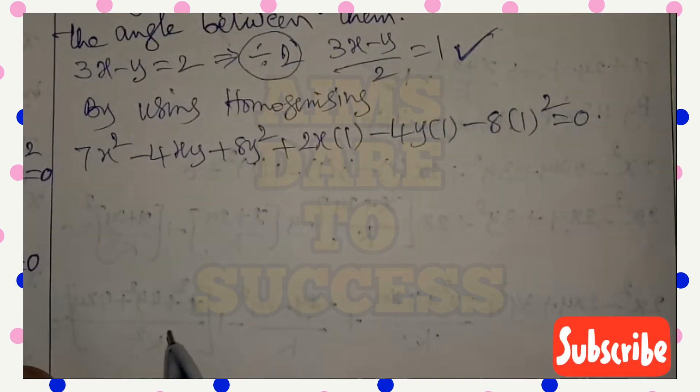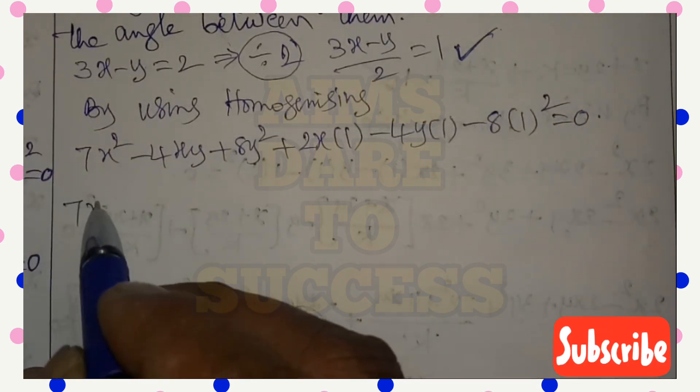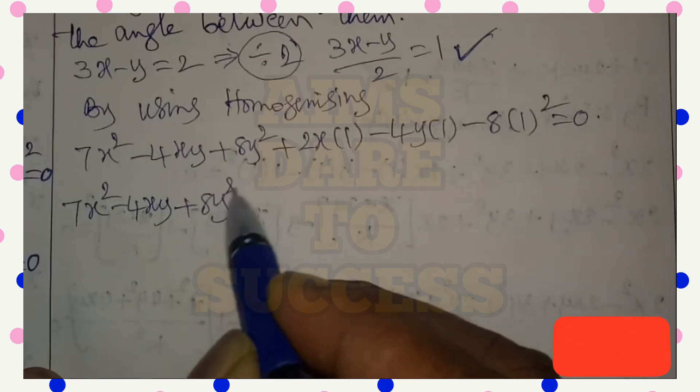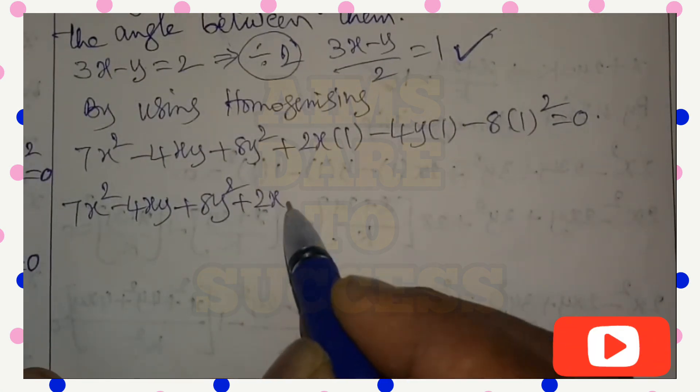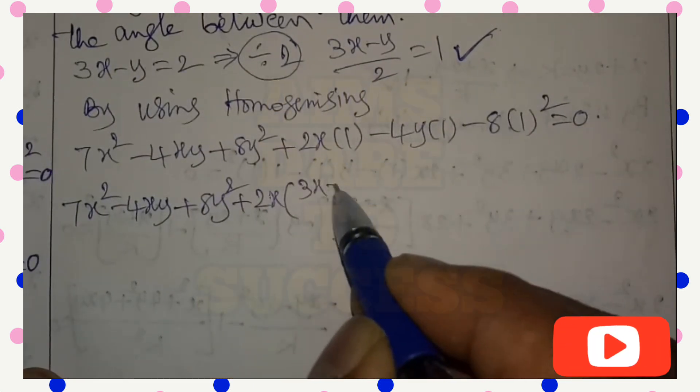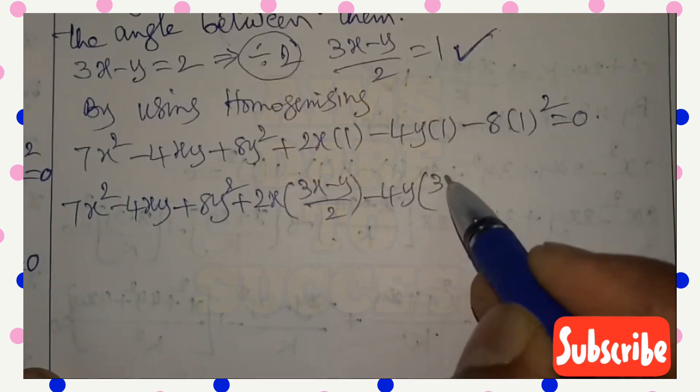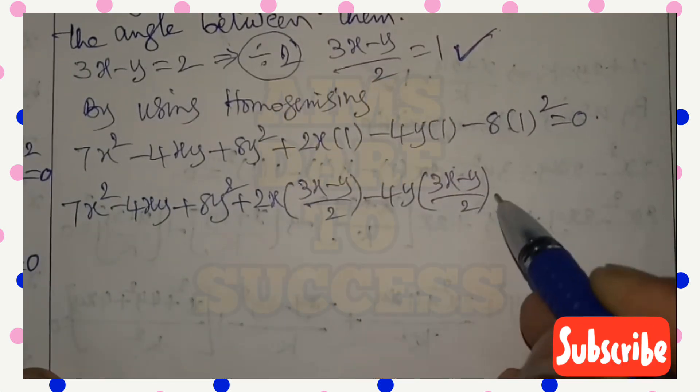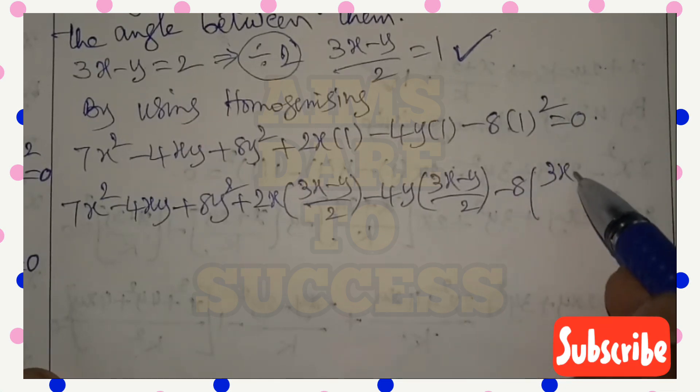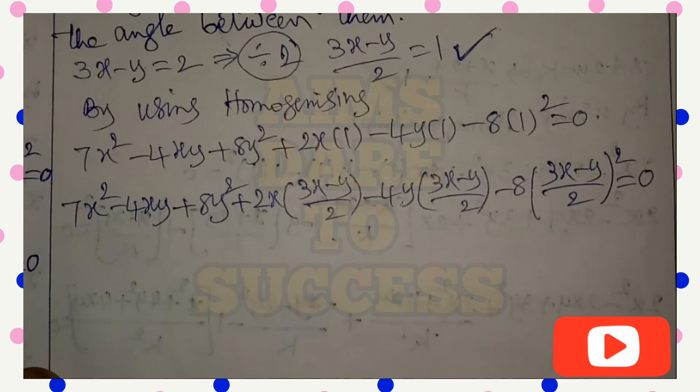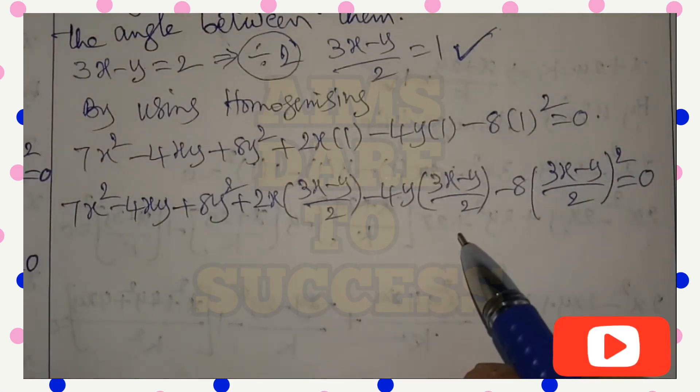1 means (3x - y)/2. We will write it. So we get 7x² - 4xy + 8y² + 2x(3x - y)/2 - 4y(3x - y)/2 - 8(3x - y)/2² = 0.